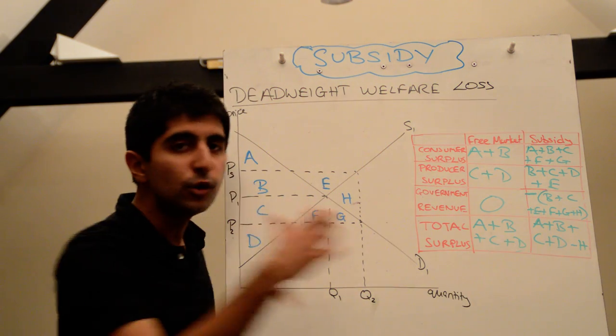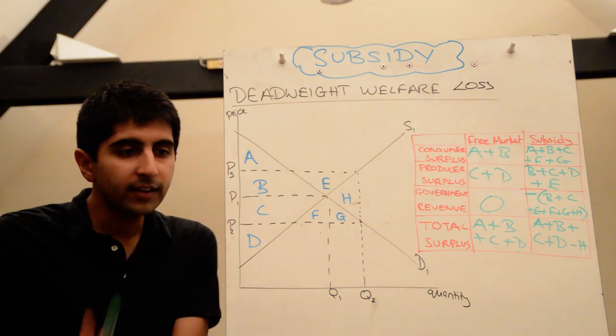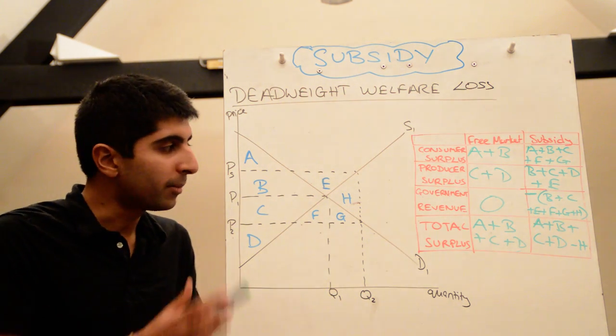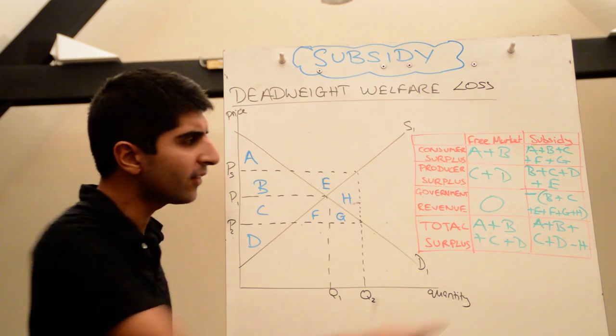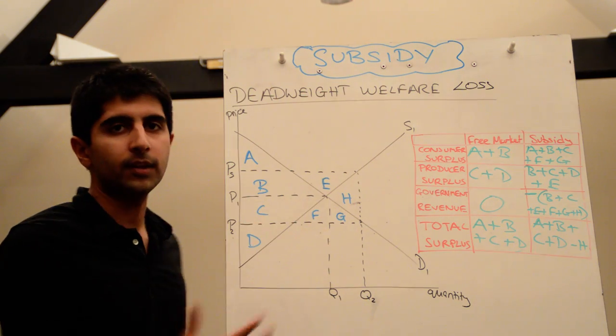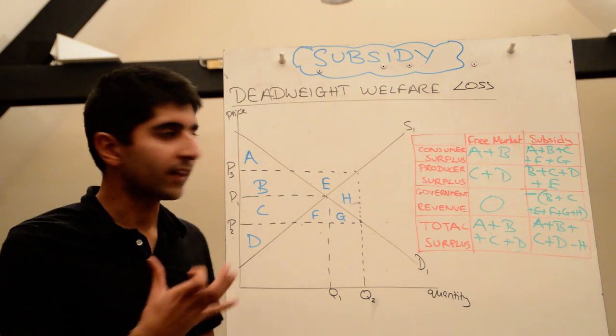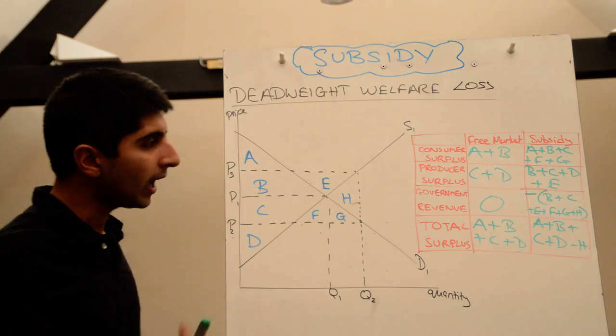It's a cost as a result of the subsidy being implemented that wasn't previously a cost before. So in total, we are losing surplus in this market. There is a deadweight loss in society. Society has to pay an extra cost when before there wasn't that cost initially. And think of that cost as being taxpayers' revenue. The taxpayers are paying for this subsidy when before, they weren't actually suffering that same cost at all.